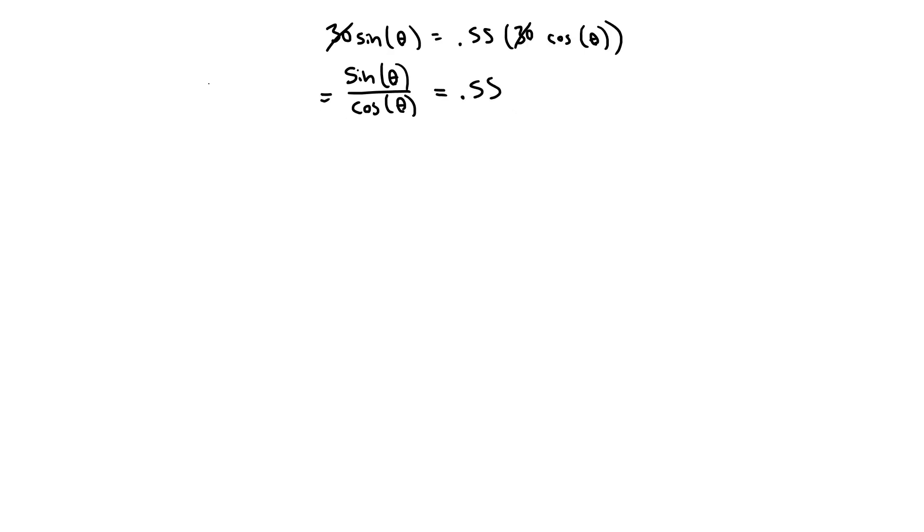And if I know my trig identities, sine of theta divided by cosine of theta is the tangent of theta. So if I take the inverse tangent of 0.55, that gives me my theta. Theta equals 28.81 degrees. That is the angle at which if I raise the platform, I would expect slipping to occur.